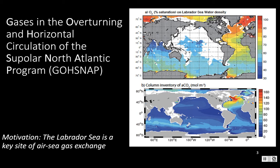That's where we came up with GO-SNAP, and I hope I can explain succinctly why we've added that H. The motivation was readily apparent because the Labrador Sea is a key site of air-sea gas exchange. At the top I'm plotting oxygen percent saturation on the Labrador Sea water density, and we know from plots like this and many other investigations that Labrador Sea water formation oxygenates a very large volume of ocean water, providing oxygen far from that formation region. Another well-known plot, originally by Sabine et al., shows the column inventory of anthropogenic CO2 — the Labrador Sea is the global maximum for that quantity.